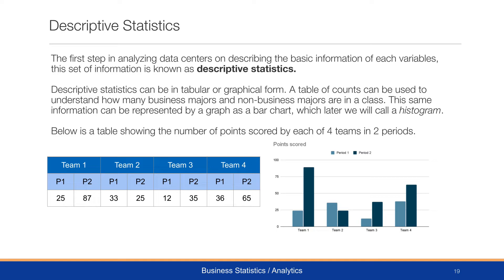Below is a table showing the number of points scored by four teams in two periods. We have each team with period one and period two, showing how they each did. Team one had 25 in period one and 87 in period two. Team two had 33 in period one and 25 in period two. We can then describe what's going on between these teams.